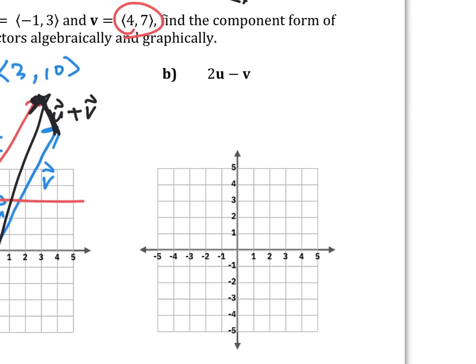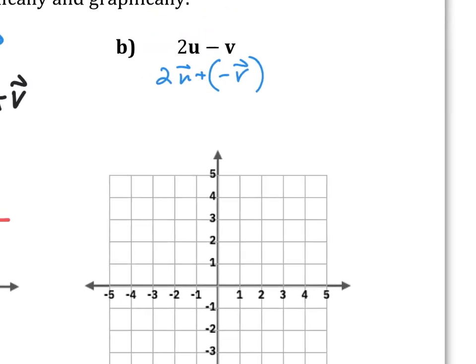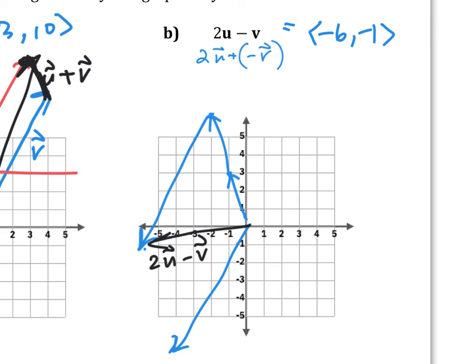Now try 2u - v. First, double the length of u. Then, since subtracting v is the same as adding negative v, take vector v and reverse its direction 180° to get -v. Combining 2u and -v using either visual method should give the resultant ⟨-6, -1⟩. If your drawing points toward (-6, -1), you did it correctly.